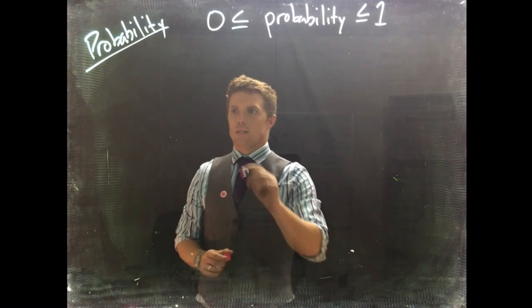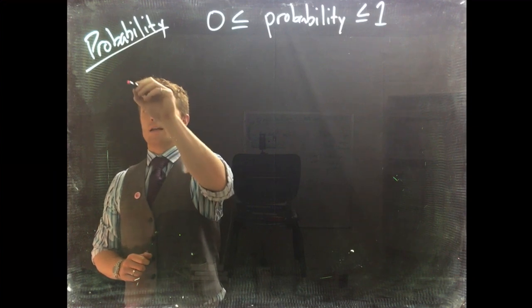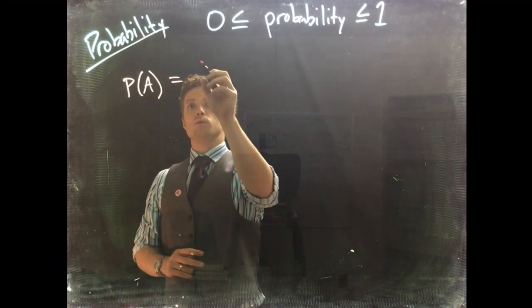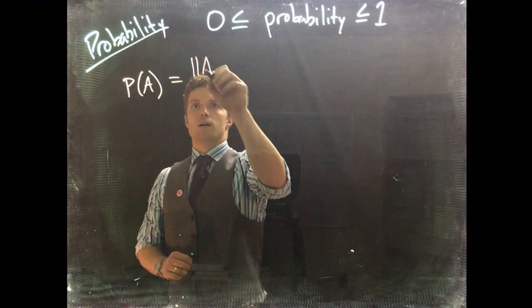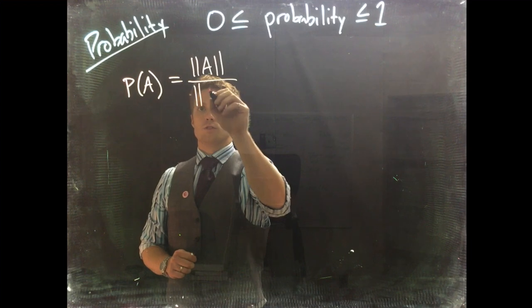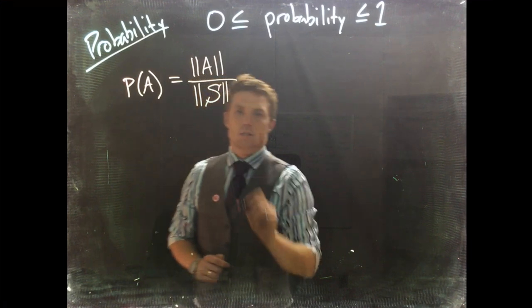That's our basic idea of probability. The probability of an event is equal to the number of outcomes in the event divided by the number of outcomes in your sample space.